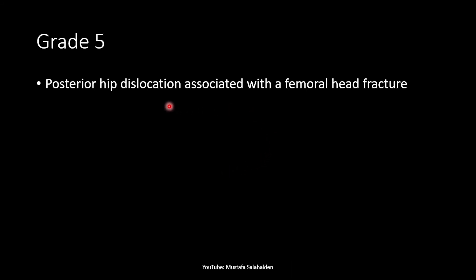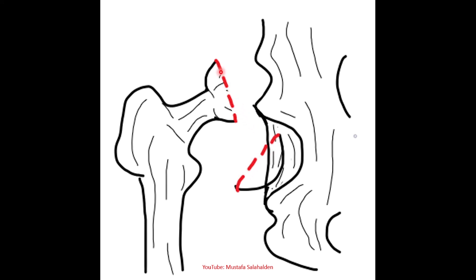In grade 5 there is a posterior hip dislocation associated with a femoral head fracture. The drawing shows the posterior hip dislocation along with the femoral head fracture. This is further classified using the Pipkin classification of femoral head fractures — so in this case it is Thompson-Epstein type 5 and Pipkin type 2. I have a video explaining the Pipkin classification in more detail and will put the link in the video description.